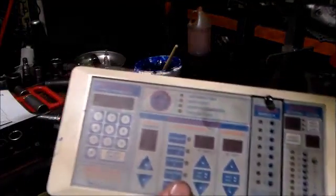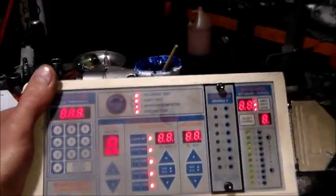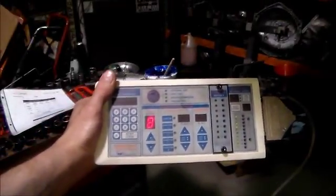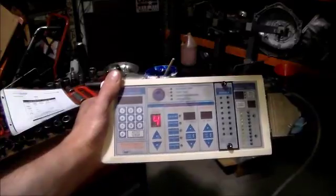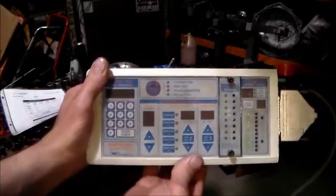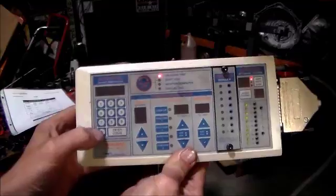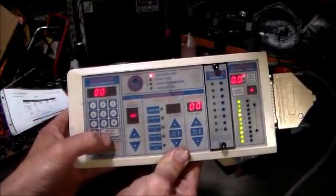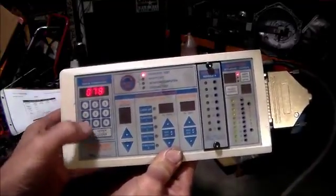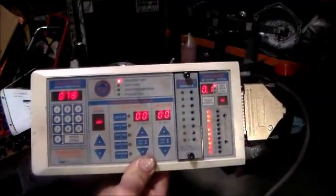This is the Tranex machine. Then what we do is put in the certain code we need. So it was code 078, so we hit zero, we've got to clear that. We hit 078, enter. So now it knows we're on a 4T65E.